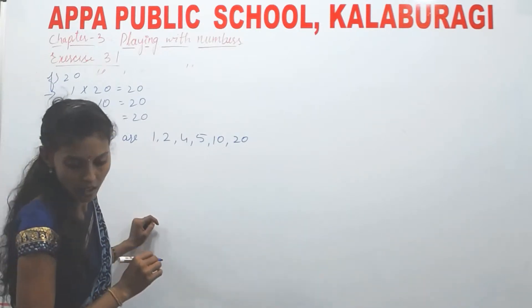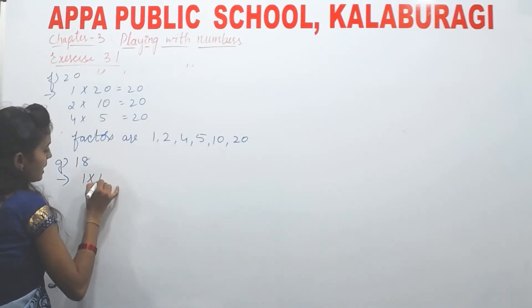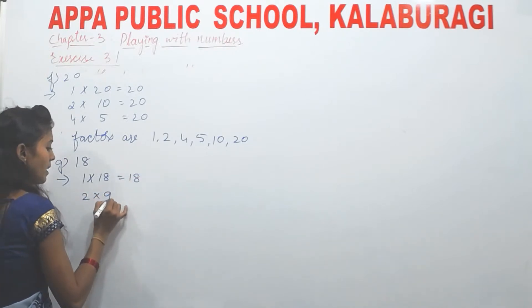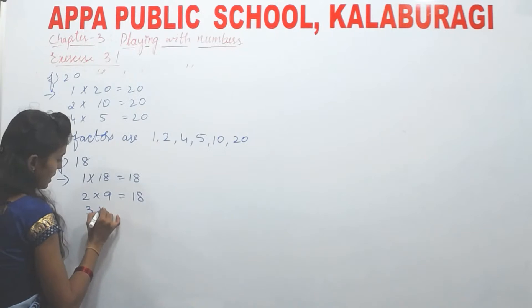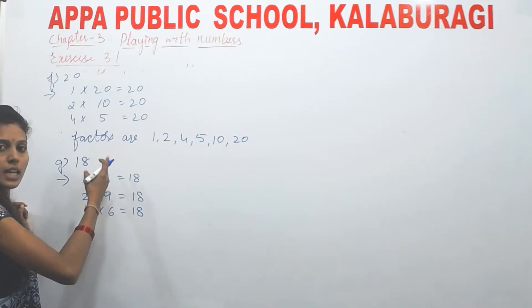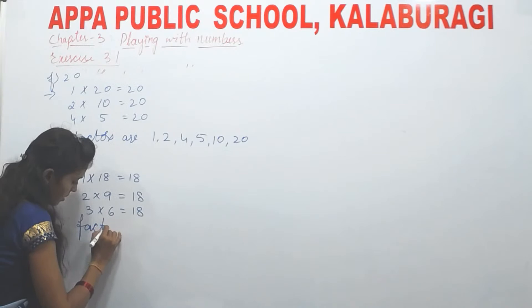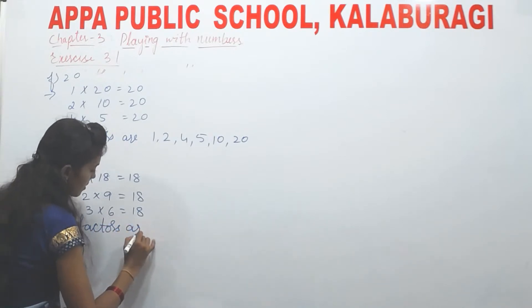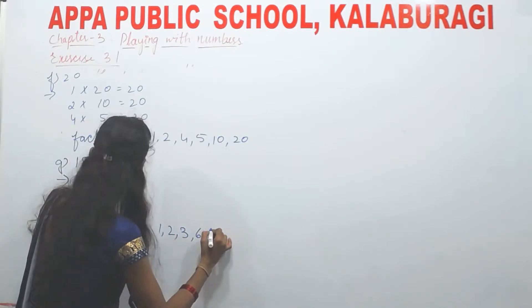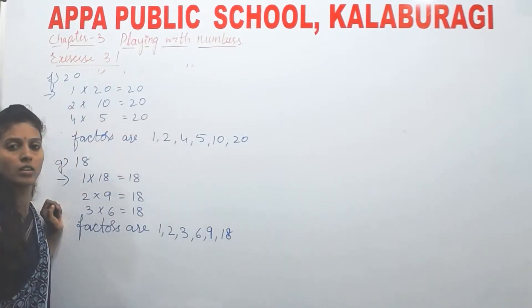Next, G is 18. 1×18=18, 2×9=18, 3×6=18, 6×3=18, 9×2=18, 18×1=18. So the factors of 18 are 1, 2, 3, 6, 9, and 18. Over.